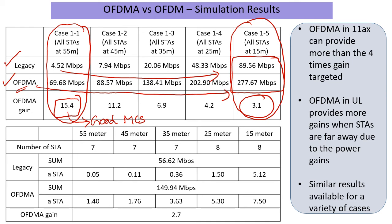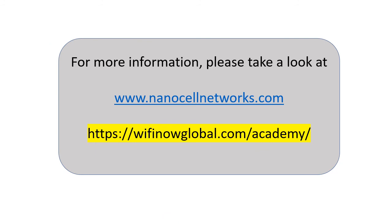This is a simple, well-designed example, but it gives us a flavor of how OFDMA can provide benefits when range issues are involved. There are more results presented where stations are spread everywhere around the AP and you can still see some average gains across the board. The main point is to highlight how OFDMA can help us in certain range scenarios, especially for uplink traffic. For more information please visit our website, and for course information on Wi-Fi 6 and other topics please visit Wi-Fi Now Academy. Thank you.